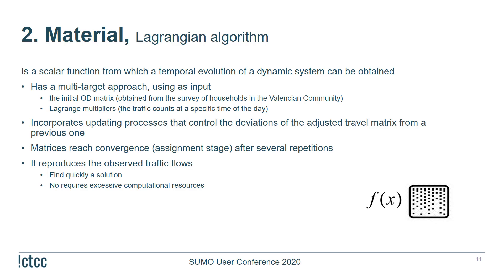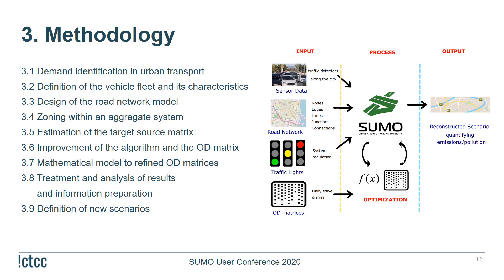The Lagrangian algorithm is a scalar function in which the temporal evolution of a dynamic system can be obtained. It has a multi-target approach, using as input the initial origin-destination matrix obtained from the survey. The Lagrangian algorithm uses Lagrange multipliers that incorporate traffic counts at specific times of day, updating processes that control the deviation of the adjusted travel matrix from a previous one. The algorithm allows reproduction of observed traffic flows, reaching convergence after several repetitions, and finds a quick solution without requiring excessive computational resources.